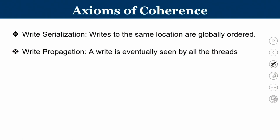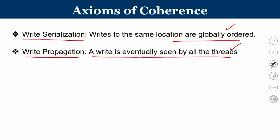There are two important axioms of coherence. The first is write serialization: writes to the same location must be globally ordered — everybody must see the same serial order of writes. The second is write propagation: a write on a memory location done by any processor should eventually be seen by all threads. Write serialization ensures a consistent global order; write propagation ensures the effect of every write is visible everywhere. These are the two fundamental axioms of coherence.